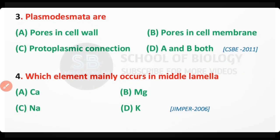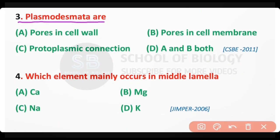Question number three: Plasmodesmata are — pores in the cell wall, pores in the cell membrane, protoplasmic connections, or both A and B? The correct answer is option C. Plasmodesmata are the protoplasmic or cytoplasmic connections between two adjacent cell walls.